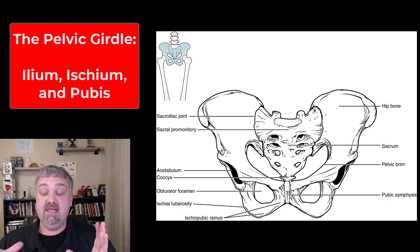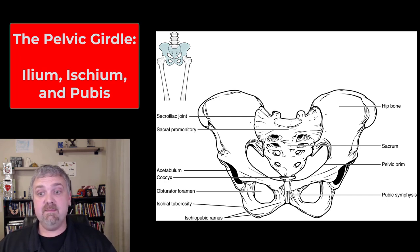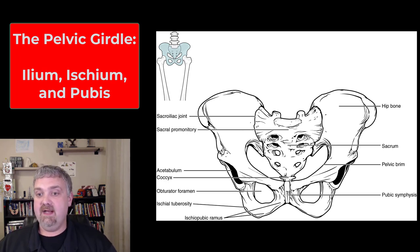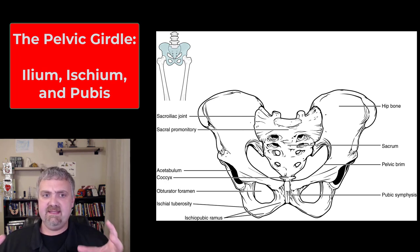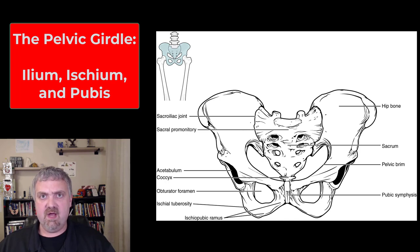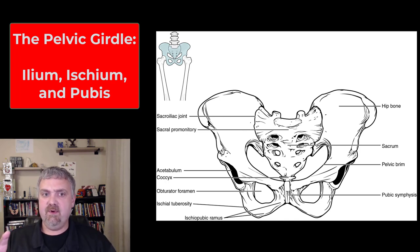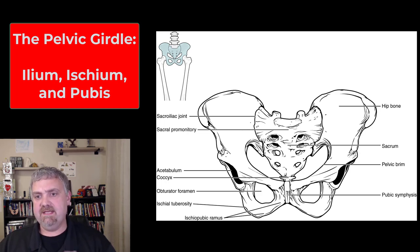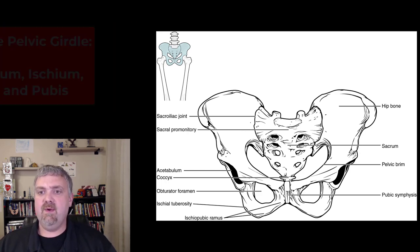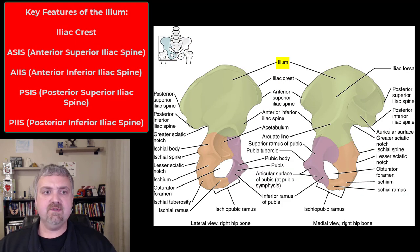The pelvic girdle is very important because this is where your lower limb attaches to your axial skeleton. The entire bony pelvis is going to be those pelvic bones — ilium, ischium, and pubis — plus the sacrum and the coccyx. So that makes up the pelvis.